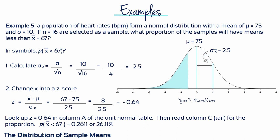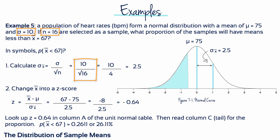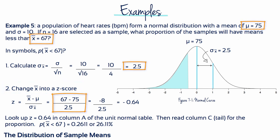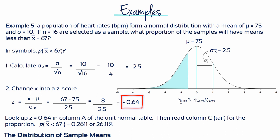Example 5: Again, a population of heart rates forms a normal distribution with a mean of 75 and a standard deviation of 10. If we choose n equals 16 people this time as a sample, what proportion of the samples will have means less than 67? The standard error is 10 divided by the square root of 16, which equals 2.5. Changing to a z-score: 67 minus 75 divided by 2.5 is negative 8 divided by 2.5, giving us a z-score of negative 0.64. Looking up 0.64 in the unit normal table gives us a proportion of 0.2611, or 26.11% — that's the probability that if we choose a sample of 16 people, their average heart rate is going to be less than 67 beats per minute.